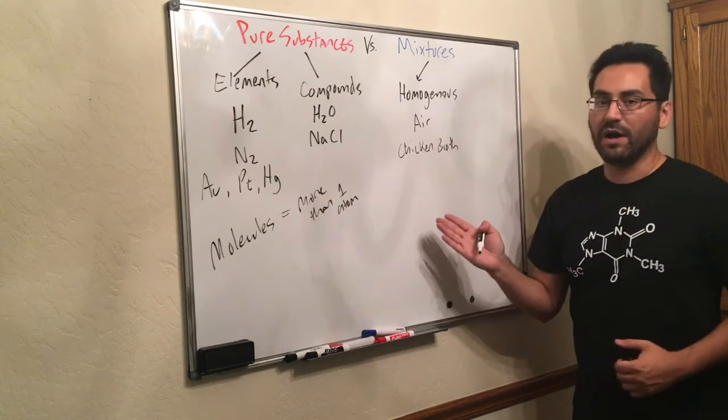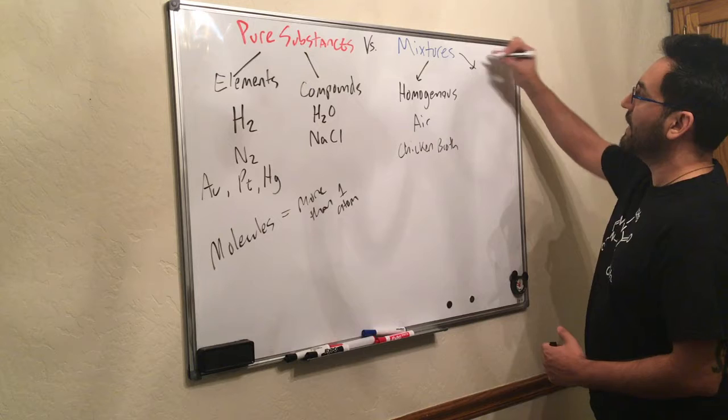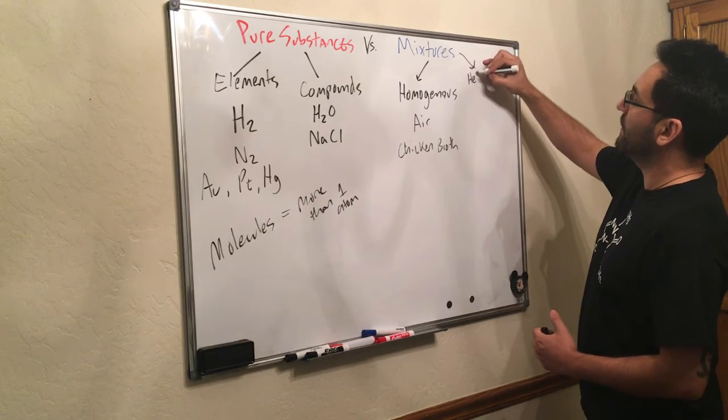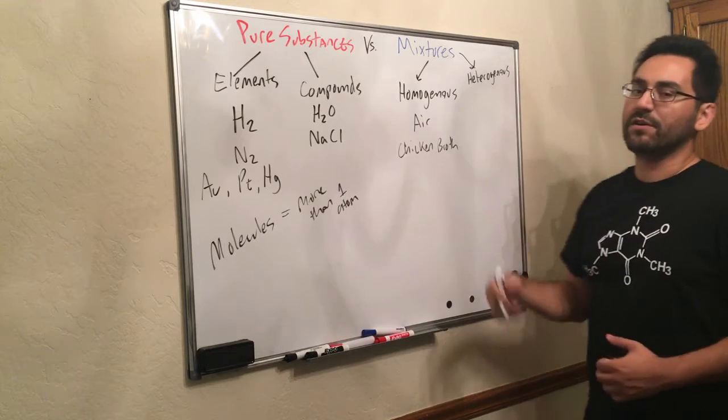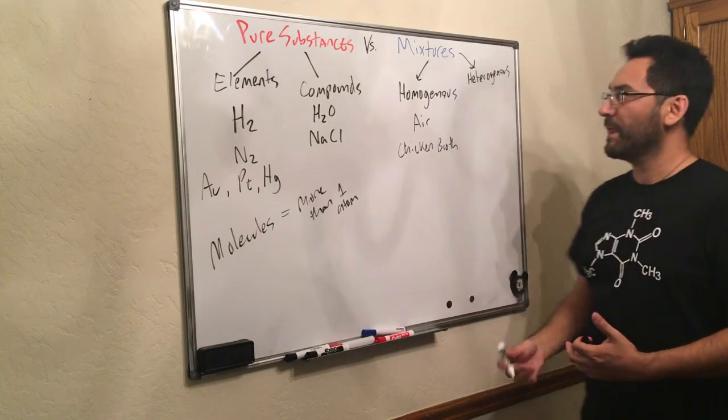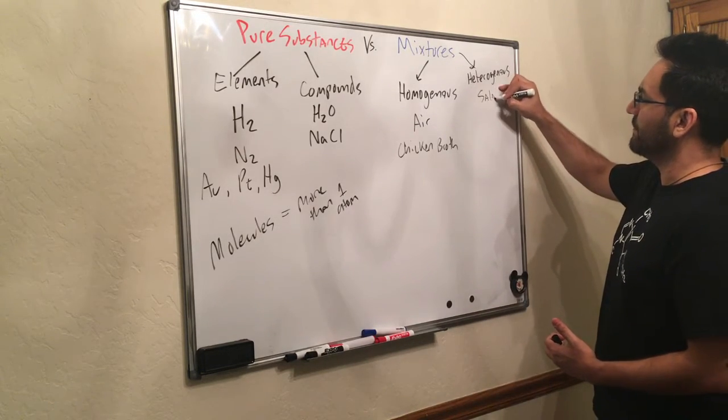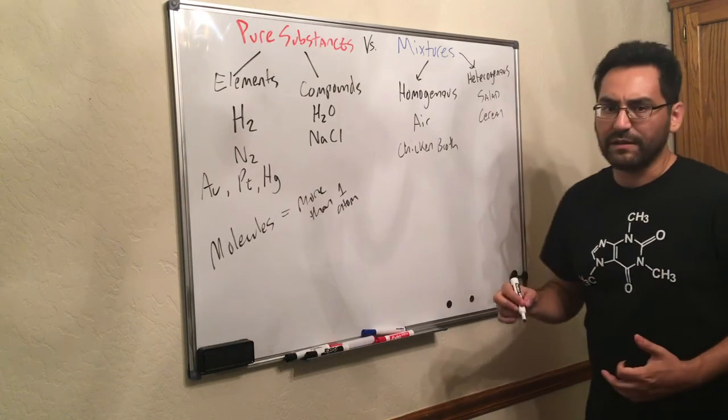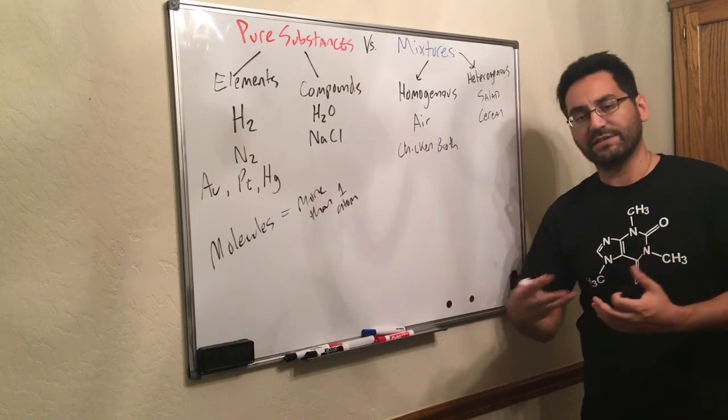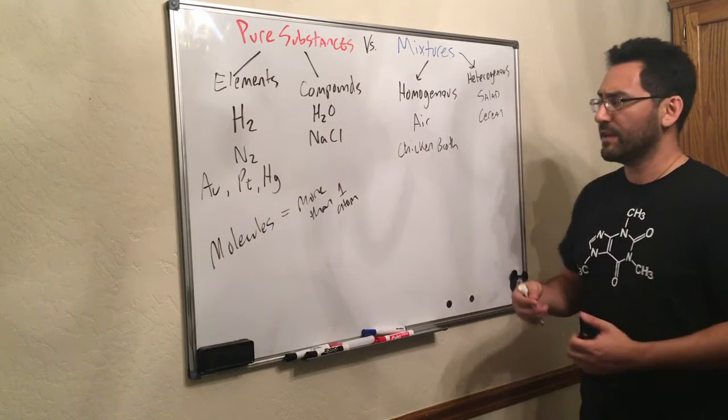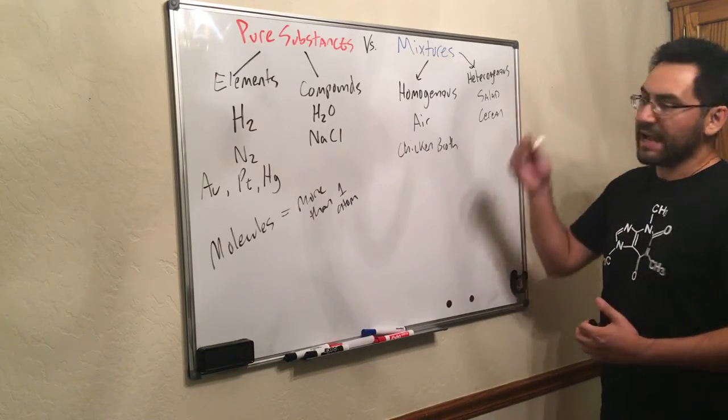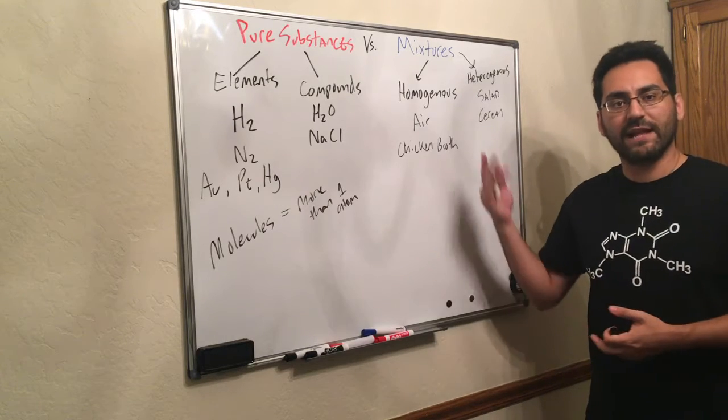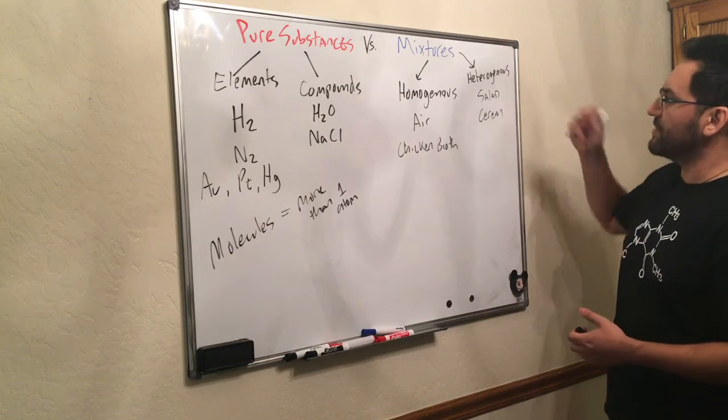Now, if they're not homogeneous, then they're heterogeneous. Now, these are not evenly mixed. So salad, for example, or cereal. Clearly the milk and the cereal are two different things. And not everywhere you look are they identical. You don't get the exact same proportions in every salad bite. So these are heterogeneous mixtures.